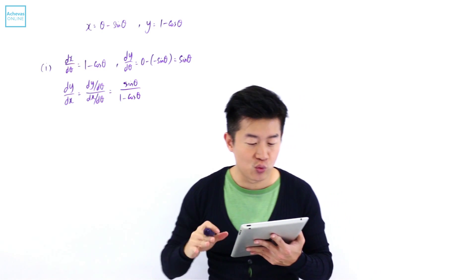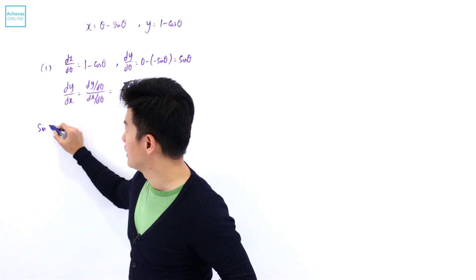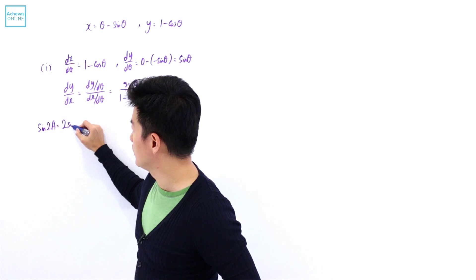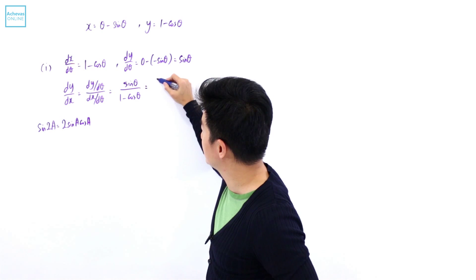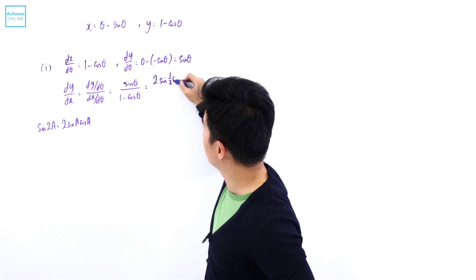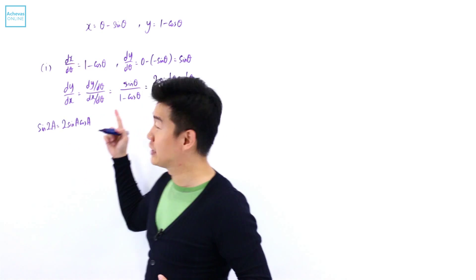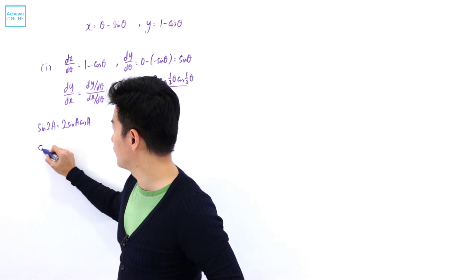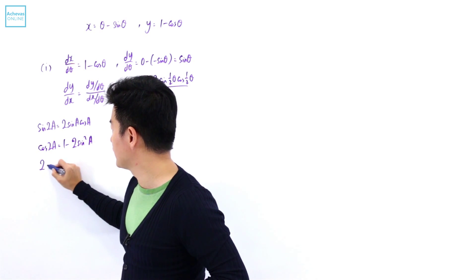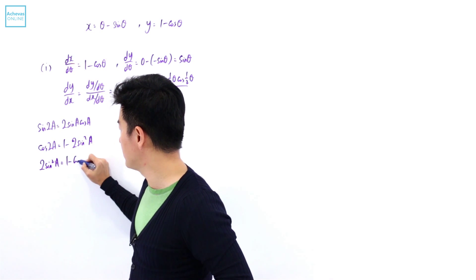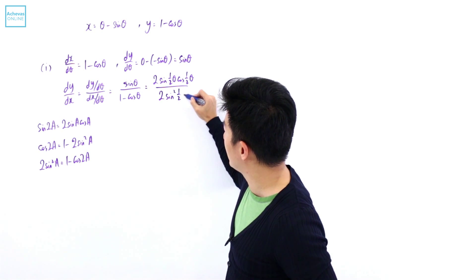The question wants us to re-express this in terms of half theta. For the numerator, I'm going to make use of the identity: sine 2a = 2 sine a cosine a, to change this to half theta. So it is 2 sine(θ/2) cosine(θ/2). For the denominator, I'll use cosine 2a = 1 minus 2 sine² a, which tells me that 2 sine² a = 1 minus cos 2a. So the denominator is going to be equal to 2 sine² of half theta.